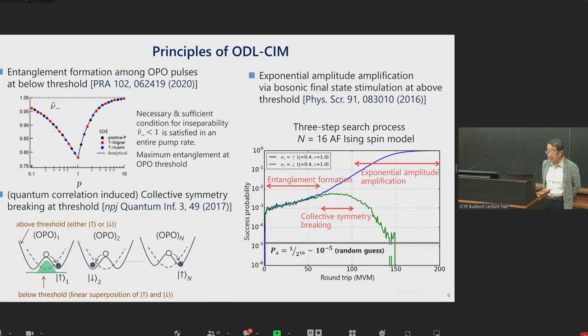Let me start with our operational principles of optical delay line based coherent Ising machine. The left top panel shows the degree of entanglement. Nu minus tilde smaller than one represents the existence of internal entanglement among OPO pulses in this particular configuration. As you can see, the necessary and sufficient condition for inseparability is satisfied in the entire pump rate, but the maximum entanglement is formed at OPO oscillation threshold. The second step of this device is quantum correlation induced collective symmetry break at threshold.